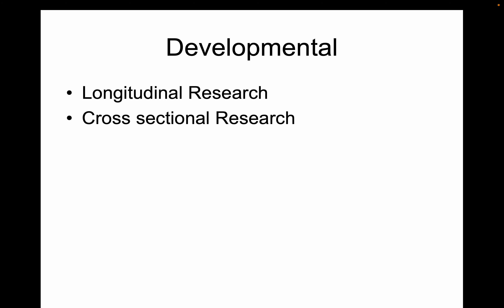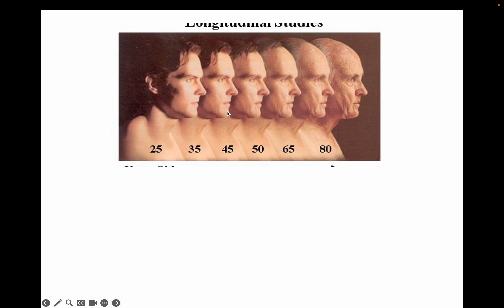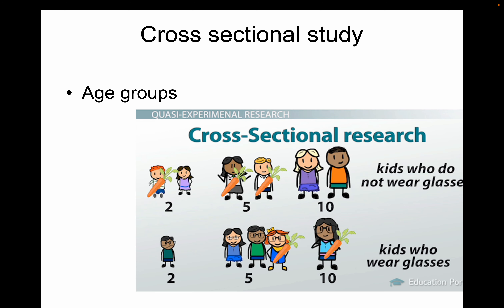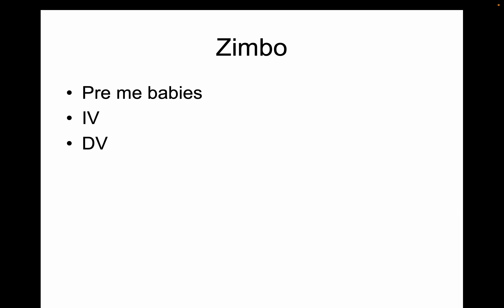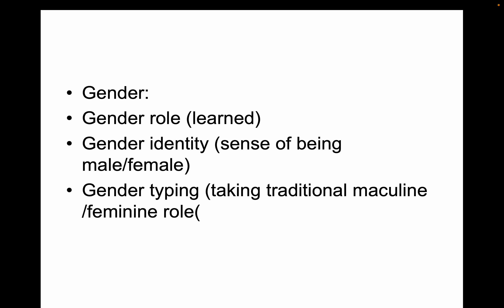Research techniques across the lifespan: longitudinal research studies the same person over many years — expensive and they probably won't call you back. More common is cross-sectional research, where you study different age groups — two-year-olds, five-year-olds, ten-year-olds — at the same time.